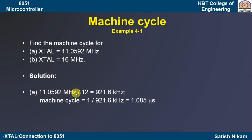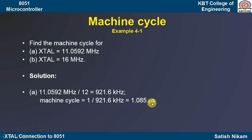Knowing the machine cycle frequency, we can calculate the time period: one divided by frequency gives us the machine cycle time period of 1.085 microseconds. So when using a crystal frequency of 11.0592 megahertz, the machine cycle time period is 1.085 microseconds. This is the time required for the microcontroller to execute an instruction that runs in one machine cycle.